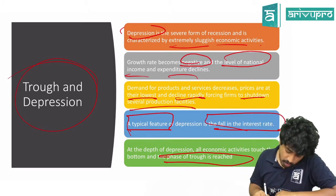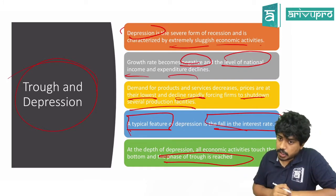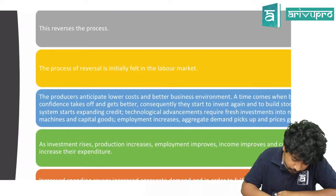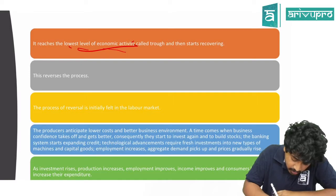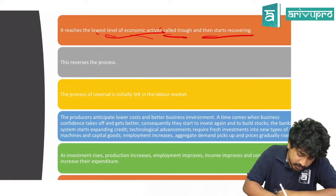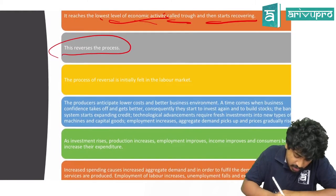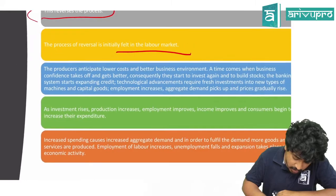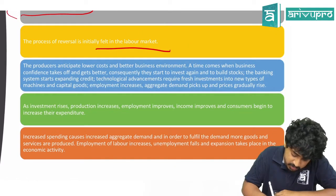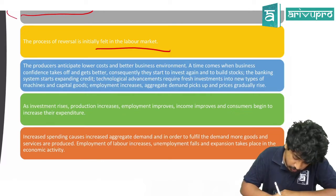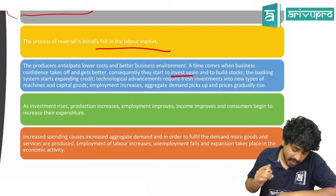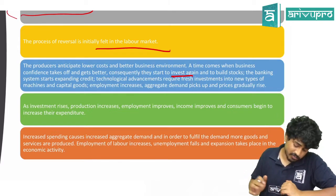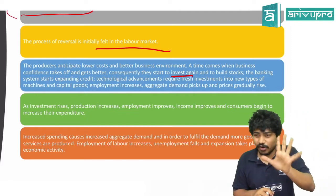Trough is the last stage of contraction — just as peak is the last stage of expansion. At the depth of depression, all economic activity touches the bottom — that phase is called trough. Certain tea shops are getting closed. The economy reaches a low level of economic activity called trough and starts to recover. This reversal process is initially felt in the labor force.